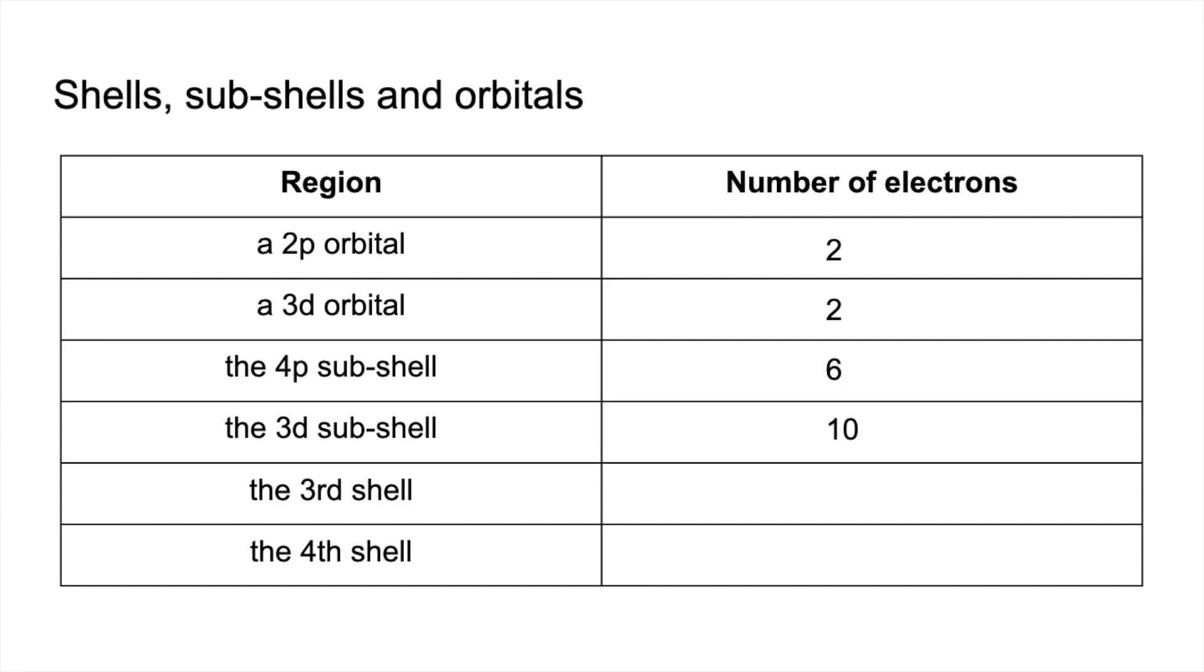And then the last two, the third shell can hold 18 electrons maximum and the fourth shell is 32.